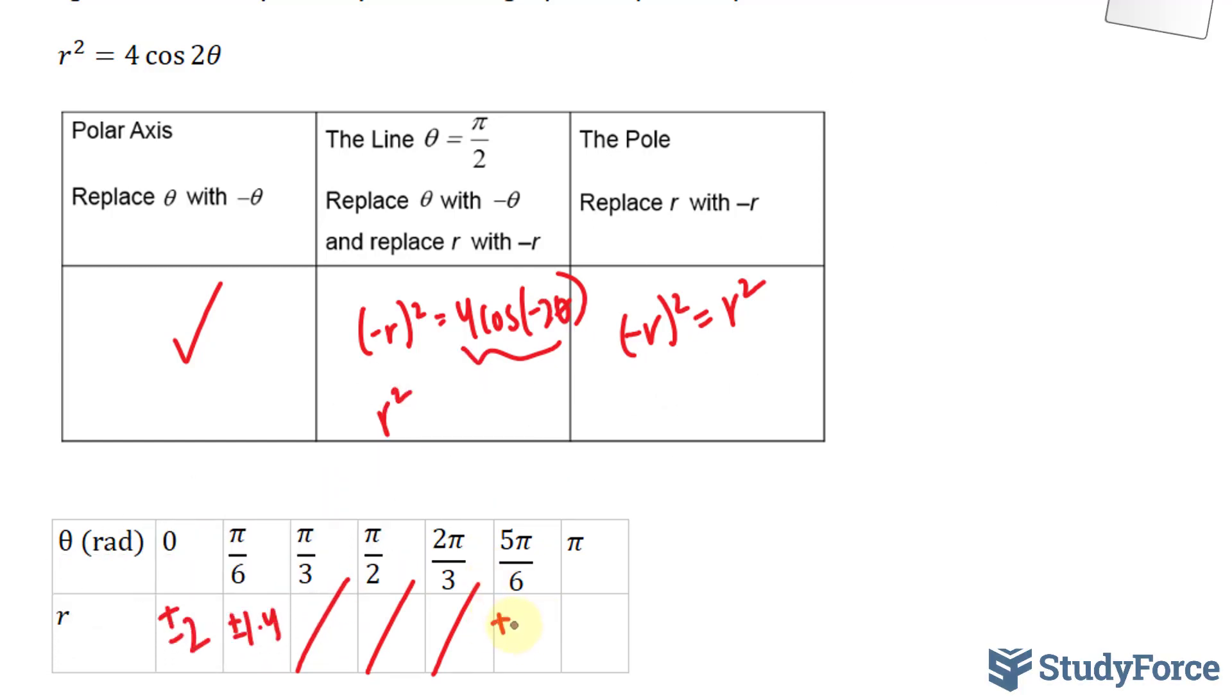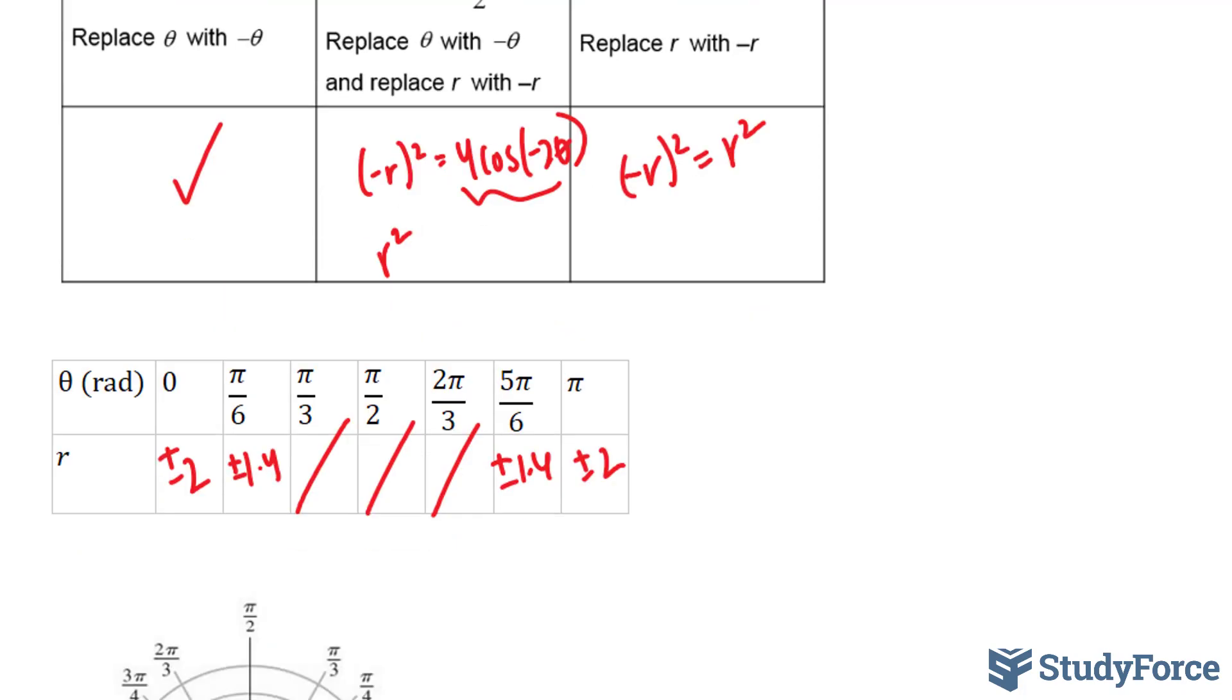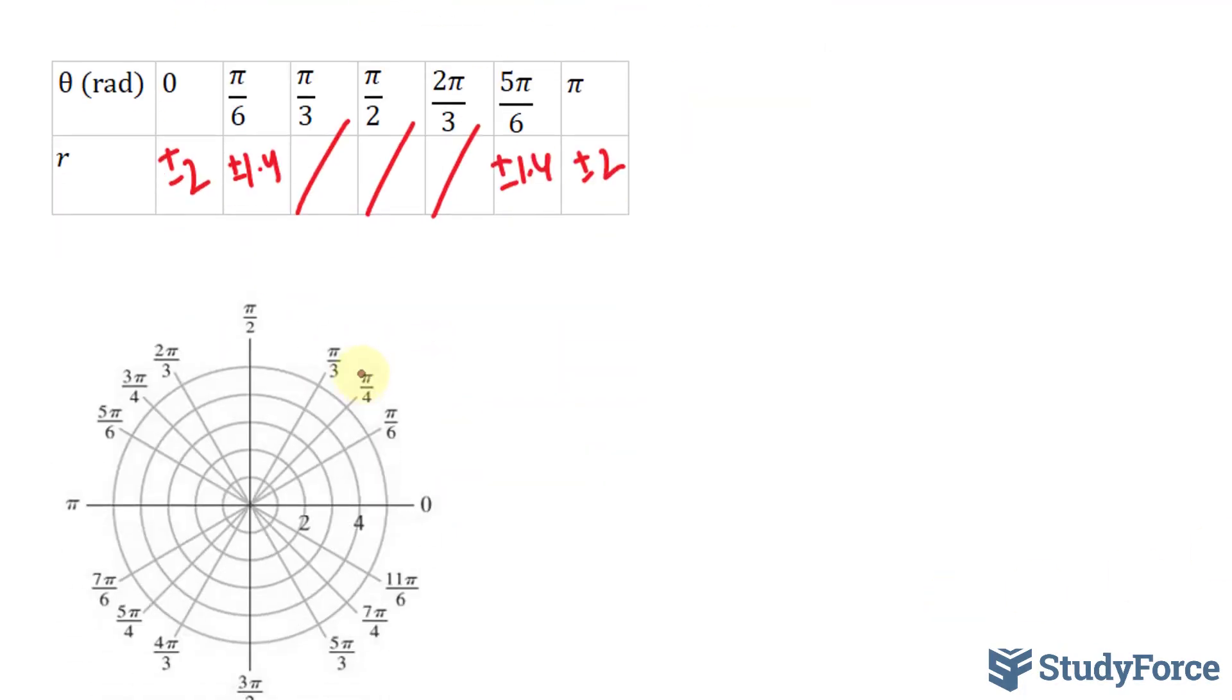5 pi over 6 will give you plus minus 1.4, and this will give you plus minus 2. Now we don't have enough points here to confidently graph this.